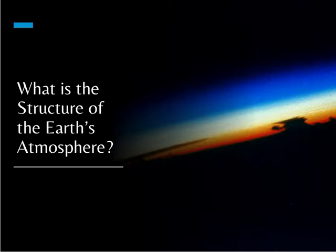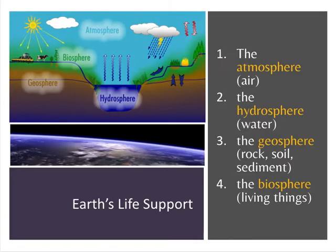First we're going to talk about the structure of the Earth's atmosphere — how it's laid out and what it's made of. The atmosphere is one of the Earth's four life support systems, divided into spheres. You have the atmosphere, which is all of the gases; the geosphere, which is all of the solid material — all the rocks and sediment; the biosphere, which is all of the living stuff; and the hydrosphere, which is all of the water, whether solid, liquid, or gas. The atmosphere — all of the gases — is what we're concerned about.